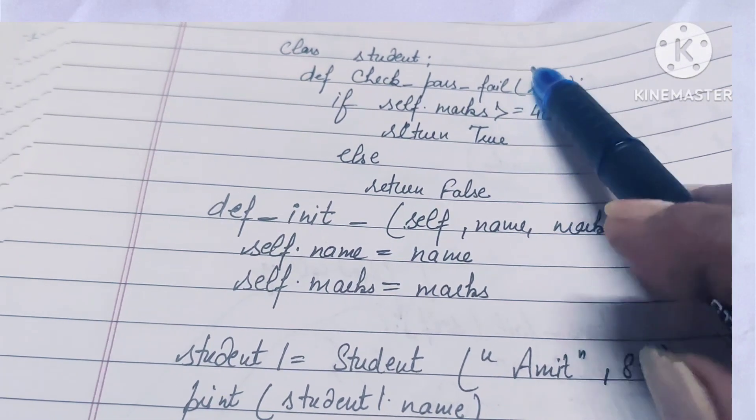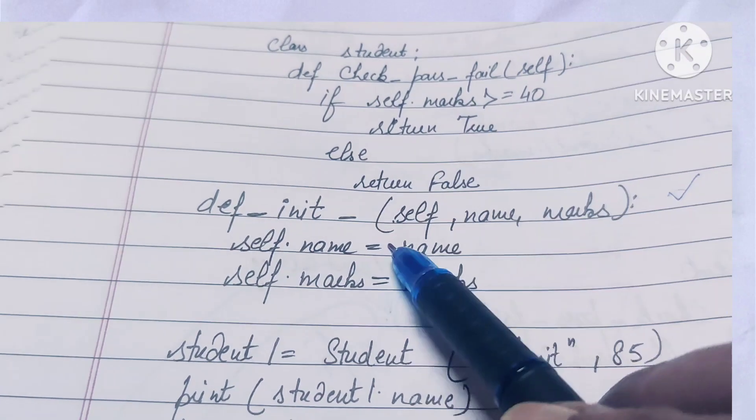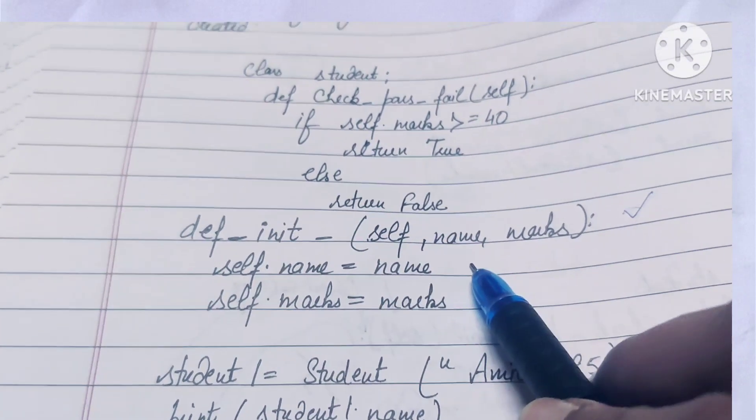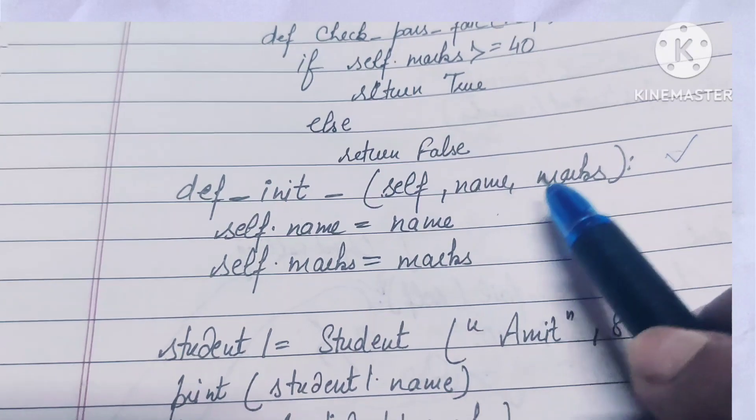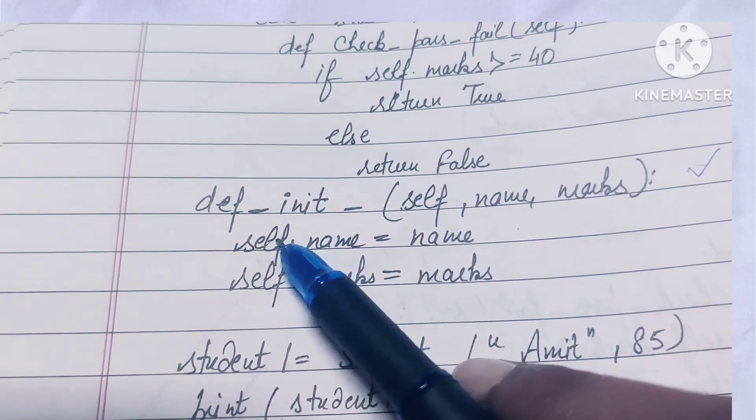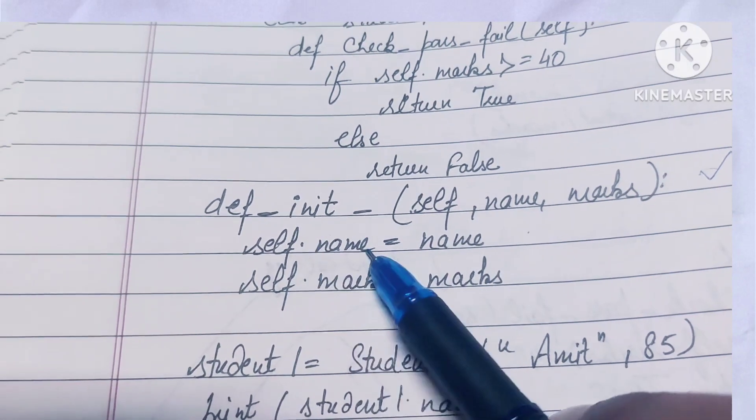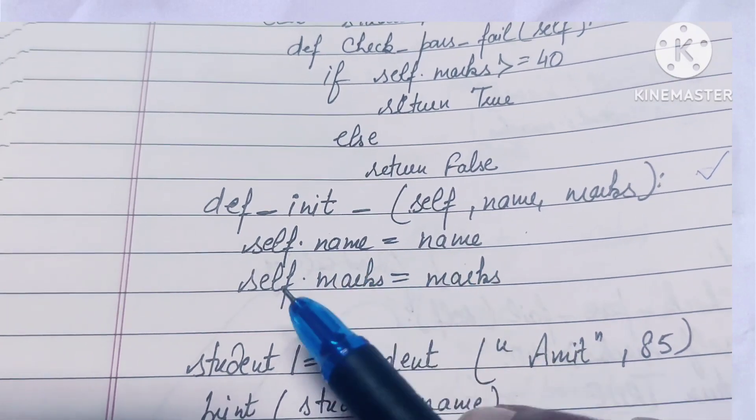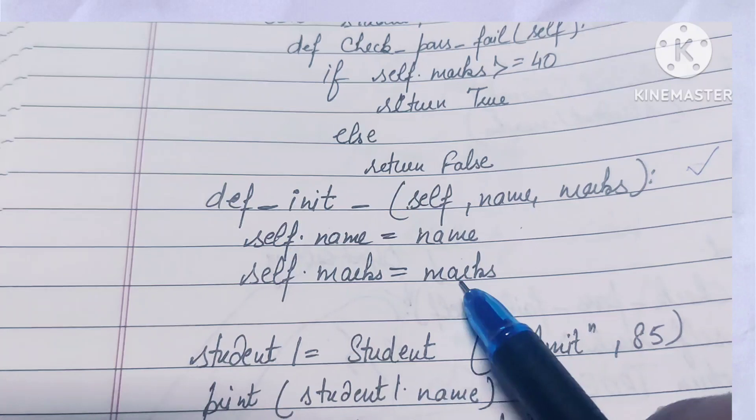This is the object. This is the major part - name and marks. So we have given here self.name equals name, and self.marks equals marks. This is the relation.